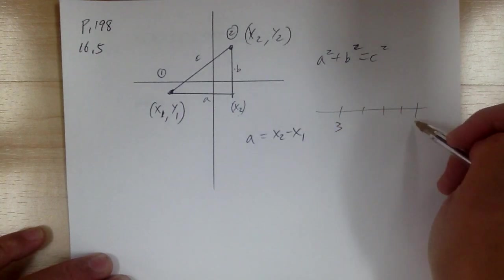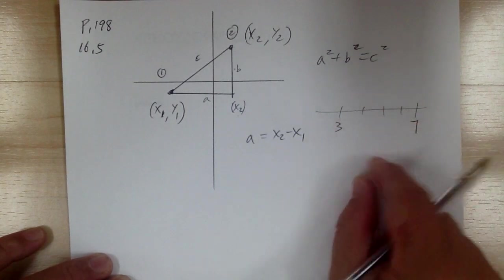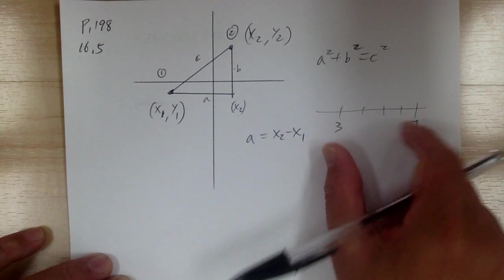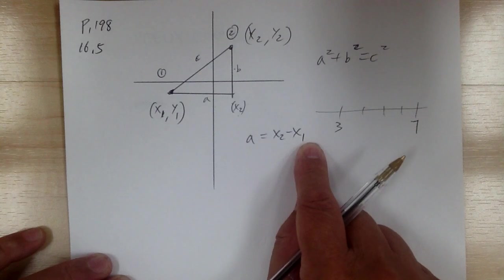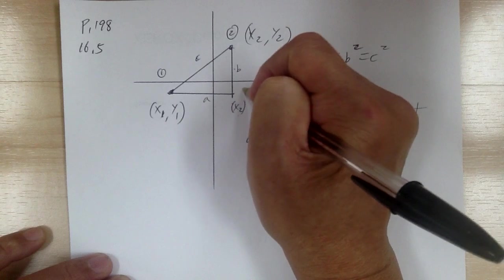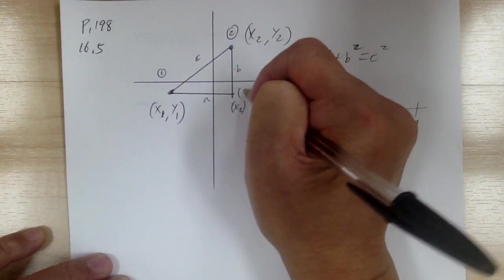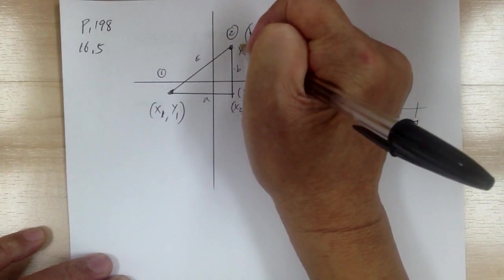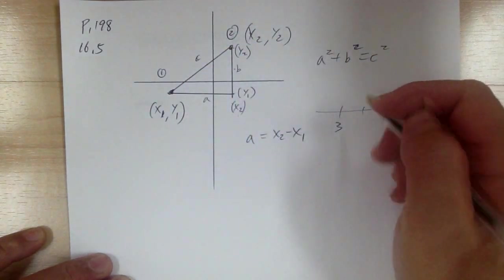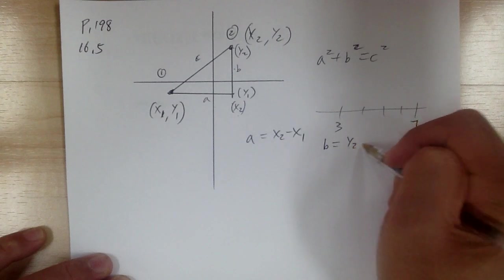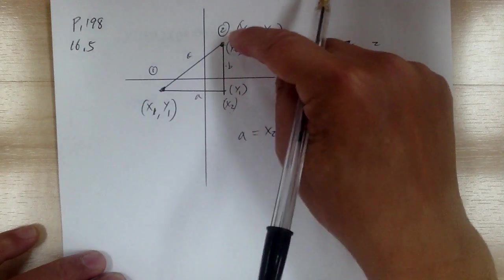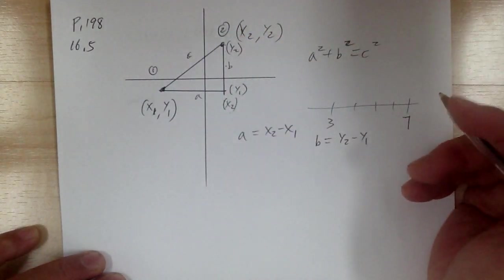Think about a number line — if you have 3 here and 7 here, the distance is 7 minus 3, which is end minus beginning. So a = x2 − x1. The same thing applies vertically: this point is y1 and this is y2, so b = y2 − y1, using end minus beginning on the vertical number line.